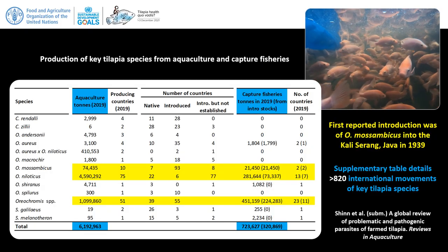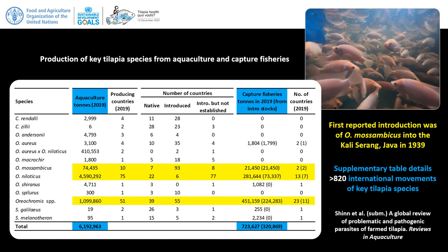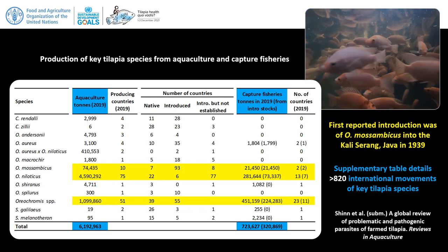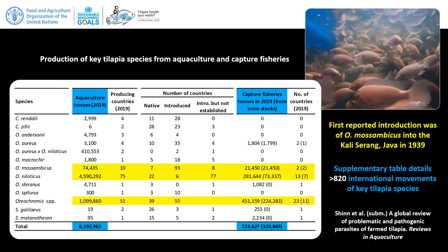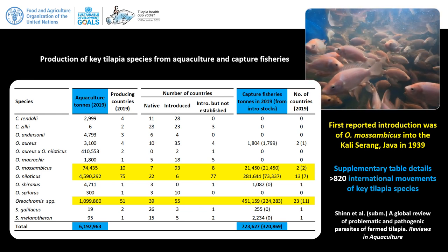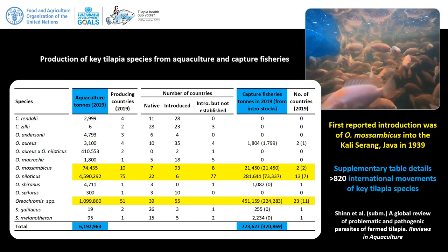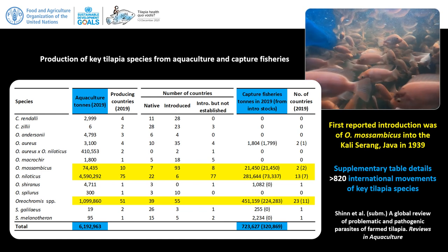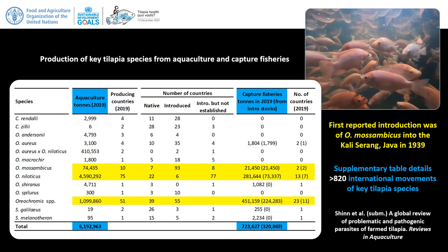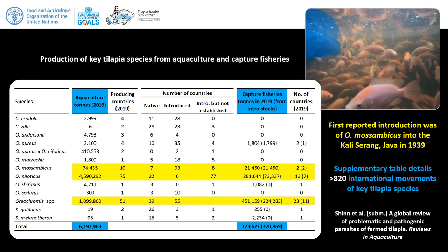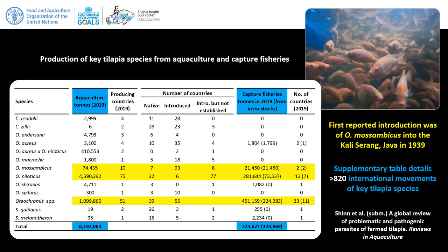We are here today not only to celebrate the successes in tilapia aquaculture, but also to look at aspects of their health. From this table I have listed some important species, and we are collectively approaching around 7 million tonnes of production — a staggering 4.8 million tonnes of which is produced in countries outside the native range in Africa. Tilapia have been introduced into well over 120 countries; today we are still farming in 97. In our review paper, we have summarised over 820 movements of tilapia.